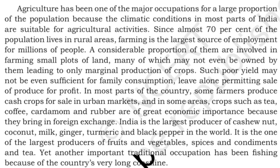The first topic is agriculture. Agriculture is the major occupation in our country for a large proportion of the population, and this is because climatic conditions in most parts of India are suitable for agricultural activities. This can come as a one or two-marker question. We know that 70 percent of the population lives in rural areas, where farming is the largest source of employment.